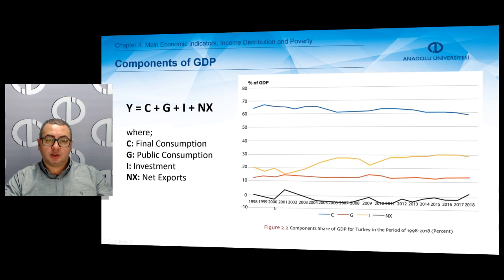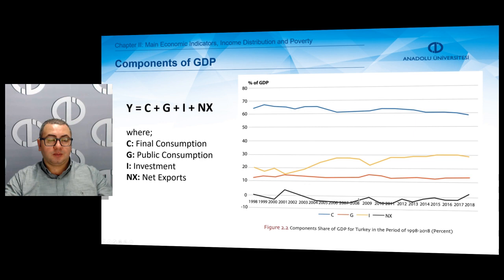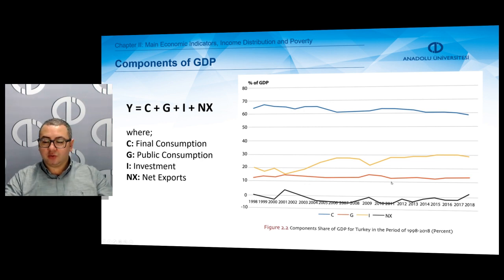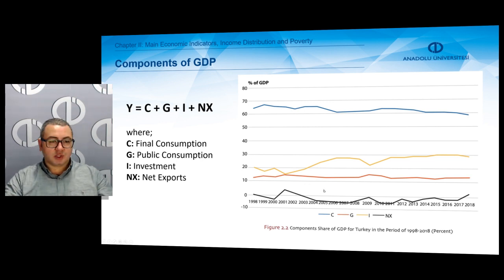This figure shows the components of GDP for the Turkish economy from 1998 to 2018. The blue line C, which is final consumption, has a slightly decreasing trend. The yellow line I, representing investment, shows an increasing trend. G, public consumption, shows a stable trend, and NX, net exports, shows a stable but wavy trend.